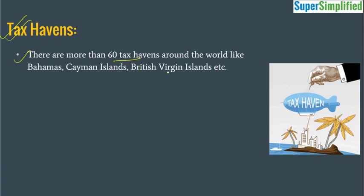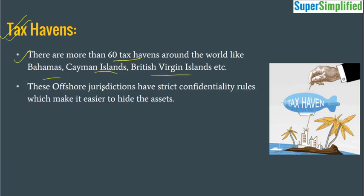There are more than 60 tax havens around the world like Bahamas, Cayman Islands, British Virgin Islands, etc. These offshore jurisdictions have strict confidentiality rules — like Switzerland, Swiss banks don't share the details of their clients. Because of these reasons, it becomes very lucrative for individuals or big corporates who want to shift their earnings or revenue to these places. And it makes it very easy for them to hide assets because of the strict confidentiality.